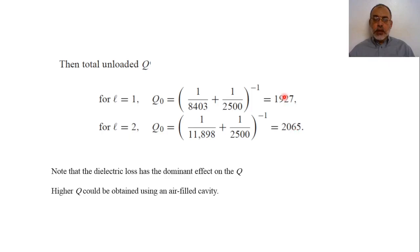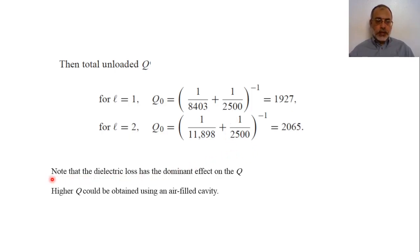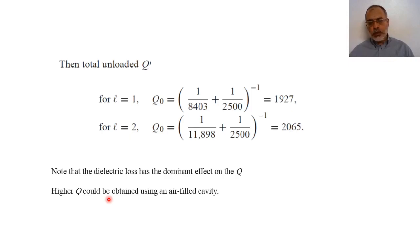It can be noted that the total unloaded quality factor is close to the quality factor of the dielectric loss. This means the dominant effect on the total unloaded quality factor is the dielectric loss. A higher quality factor can be obtained by using an air-filled cavity. The advantage of an air-filled cavity is that the loss tangent of air is nearly zero — there is no loss in air, especially if there is no humidity.